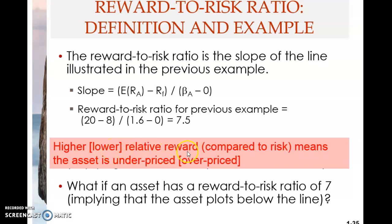If the relative reward is lower, it means that the asset is overpriced. Remember that the interest rate and the present value are always inversely related. Here, reward corresponds to the interest rate, and price or value corresponds to the present value. So higher the interest rate or reward means the present value will be lower, and lower the interest rate means the present value will be higher. We have learned this in chapters five and six — it's an application of that.